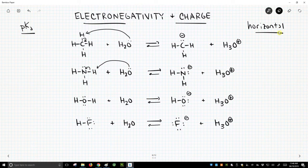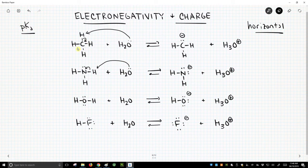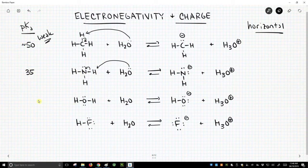As it turns out, all these molecules do not have the same acidity. Methane with the carbon has a pKa of around 50, which is a super weak acid. Ammonia NH3 has a pKa of about 35. Water is closer to 16, and HF is about 3.